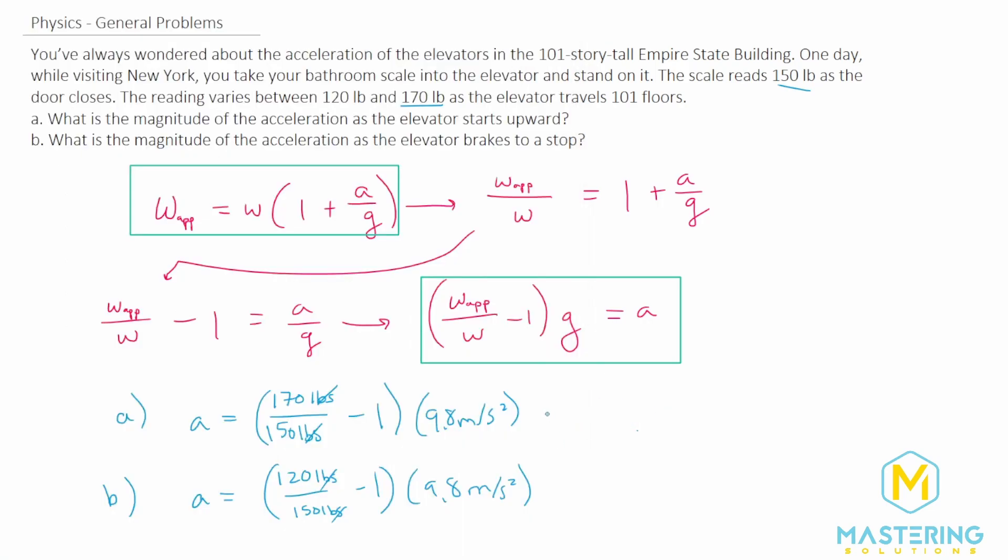So we're going up at 1.3 meters per second squared, and then slowing down was, of course, a negative 2 meters per second squared. So here are your answers for this apparent weight problem. And as I said, memorize these two equations. It'll make your life way easier.